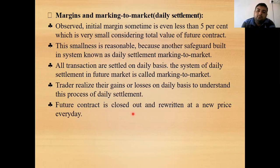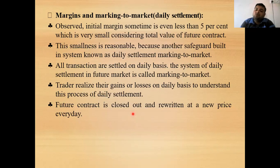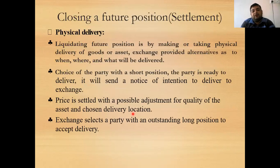On the next opening date, the contract is rewritten at the new price at which the market opens. At the end of the second day, it is again closed at the closing price. All daily fluctuations are adjusted with the margin account — this is known as marking to market. This also refers to the closing or settlement of a futures position, which can be done in various ways.